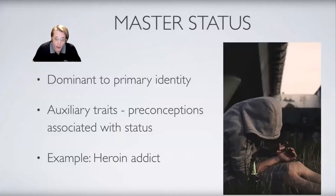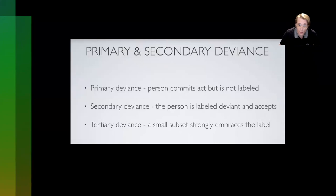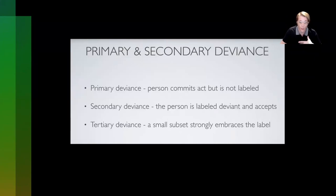Lemert built upon Becker's idea. Primary deviance is when a person commits a deviant act but is not labeled as such — most people stay here and avoid a deviant identity. Secondary deviance is when the person is labeled as a deviant for their behaviors and accepts the identity. Tertiary deviance is where a smaller subset of people end up embracing the deviant identity by strongly identifying with the label. It's important to remember that deviant identity is created through a progression of stages — a career, if you will.